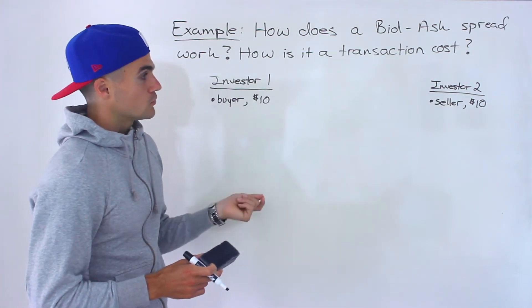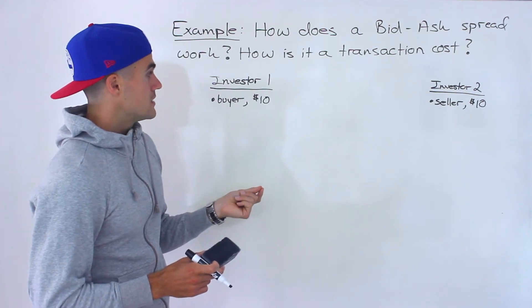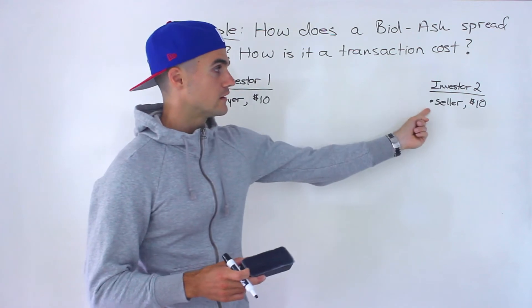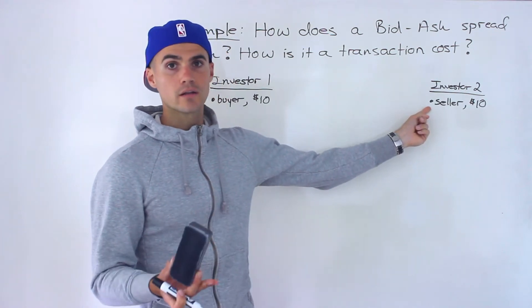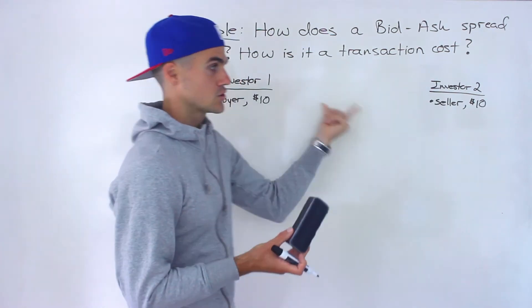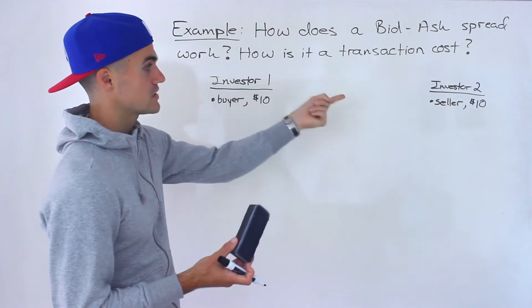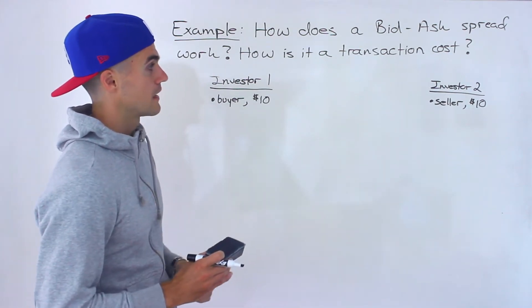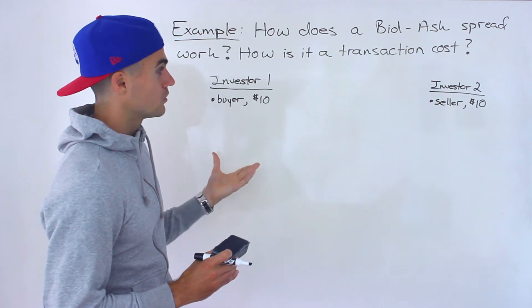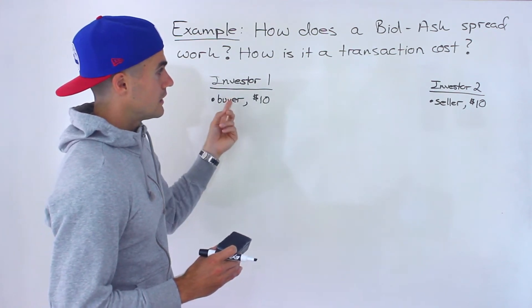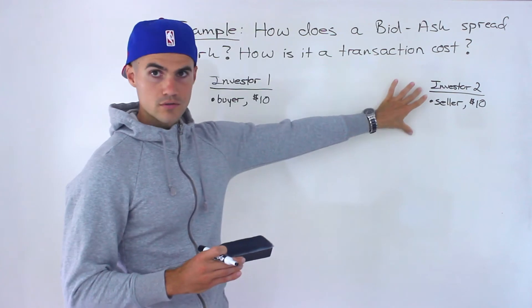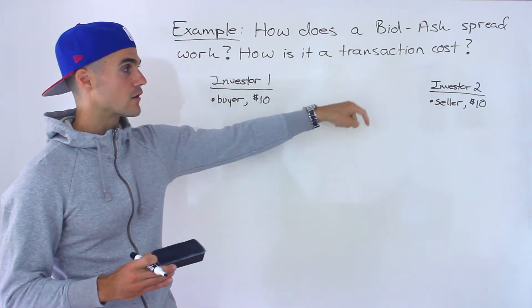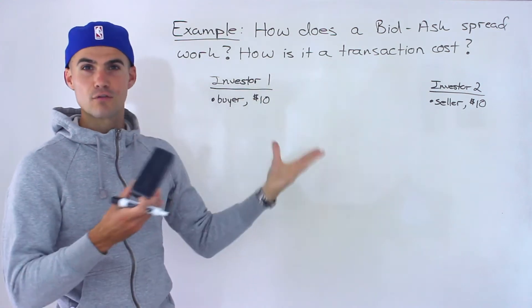Now in a perfect world, you, investor one, would be able to find investor two fairly quickly, and the transaction would be seamless. You'd buy it for $10, they'd sell it to you for $10 at that agreed upon price. However, in the real world, it would be fairly difficult for you to find this investor. Let's say they're on the other side of the world, in a different time zone — all these different variables.